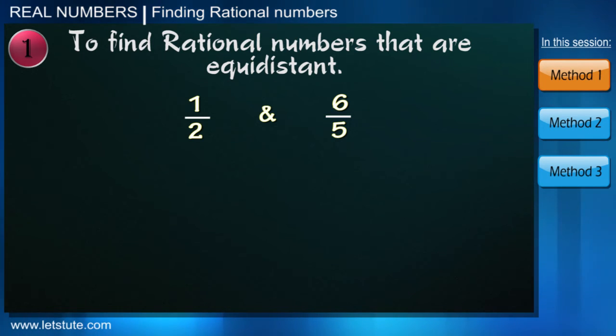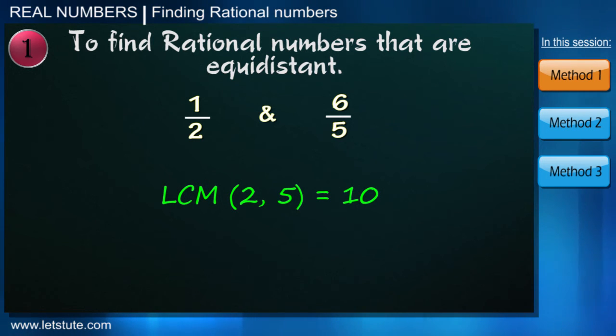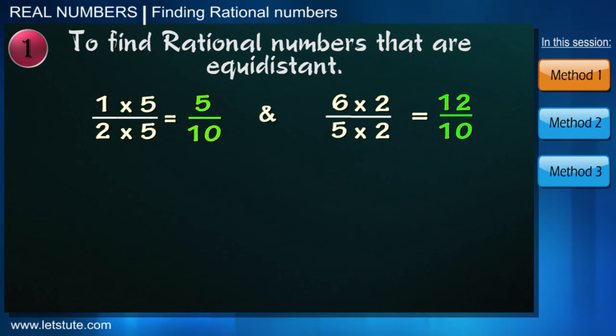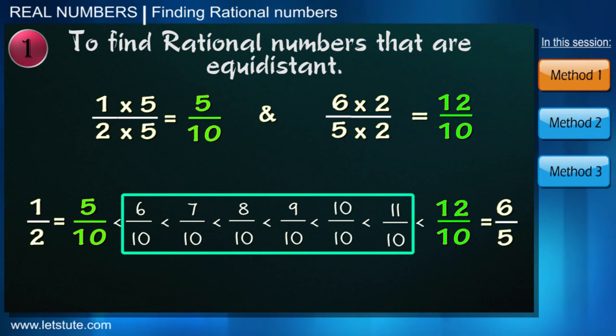Well, we can do this by using the well-known concept of least common multiple or LCM. We know that LCM of 2 and 5 is 10. So to make denominators of both the fractions same, we will multiply the fraction 1 upon 2 by 5 and 6 by 5 by 2. We can see now the denominators are equal, that is 10. So we'll write numerator in increasing order. And these are some rational numbers between the fractions 1 upon 2 and 6 by 5. So friends, like this you can take any two fractions and can find the rational numbers between them.